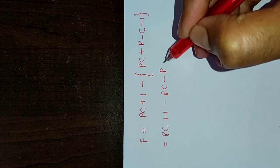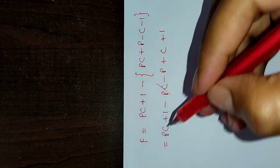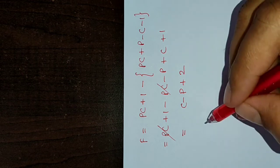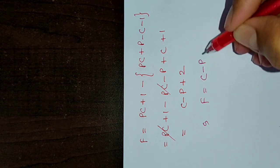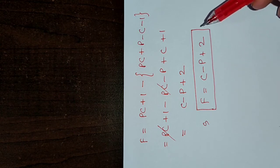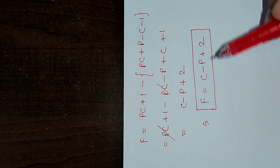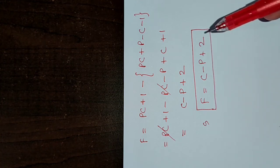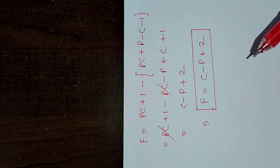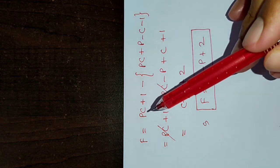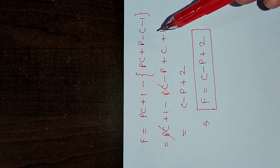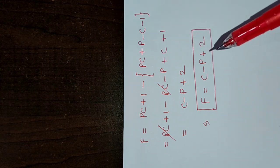F = (PC + 1) minus (PC + P minus C minus 1). PC cancels out, giving C minus P plus two — the same result as the standard phase rule. This is obvious since both the number of variables and the number of available equations are reduced by unity due to the missing component, so the result remains the same.